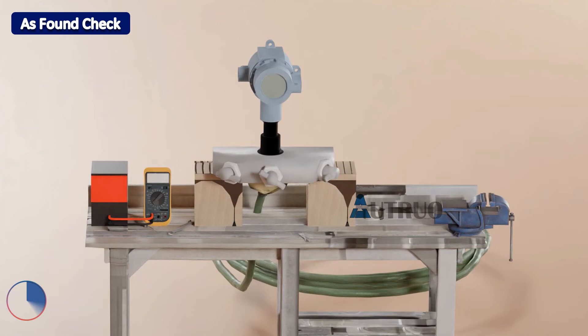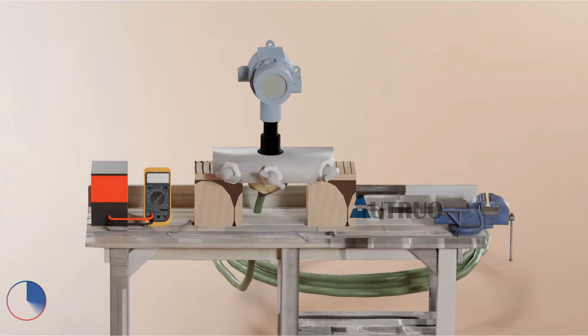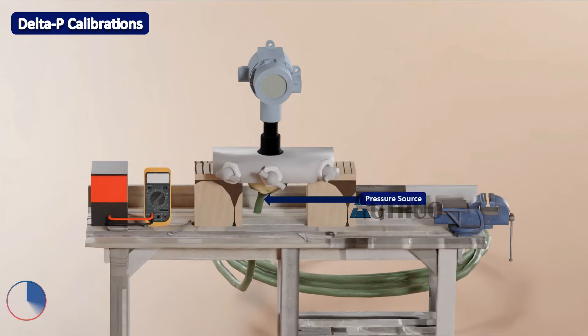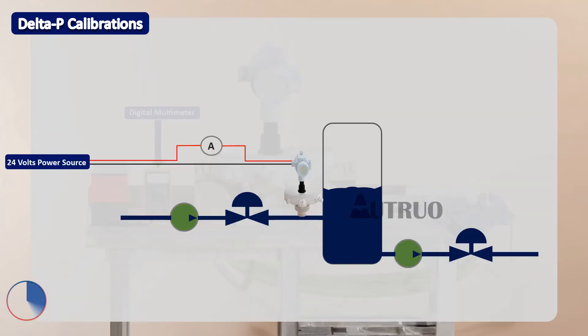We connect our pressure source once again. Again the pressure source must be accurate, because this will be the baseline of the transmitter behavior after it has been returned to the field. Again, we will also connect the digital multimeter in series with the transmitter. This is where the reading that is generated by the transmitter will be gotten. Now let's calibrate our transmitter.